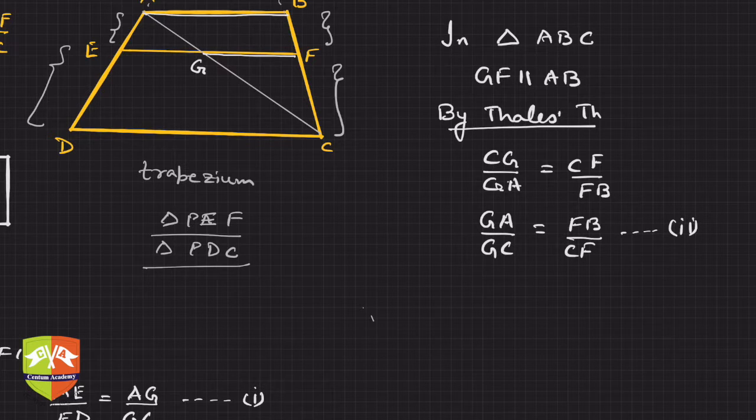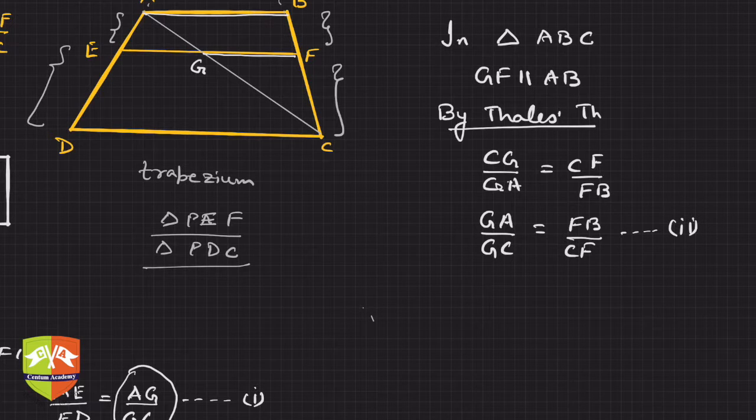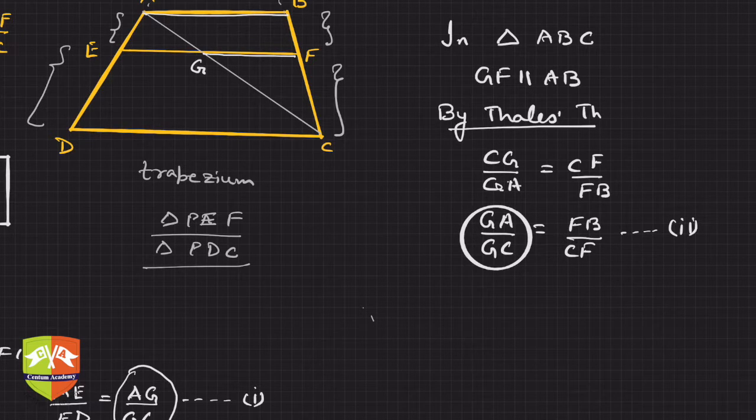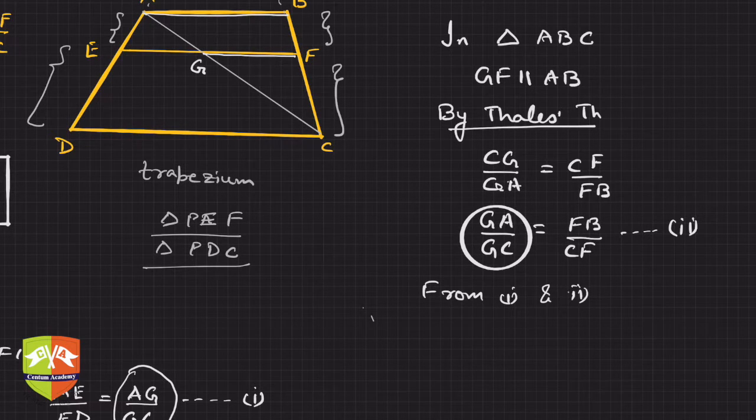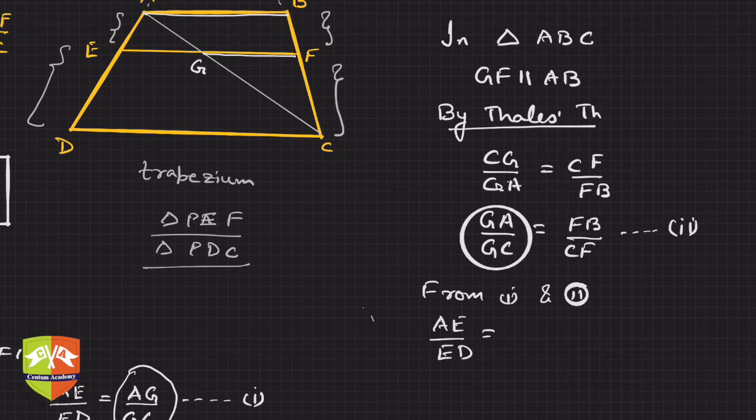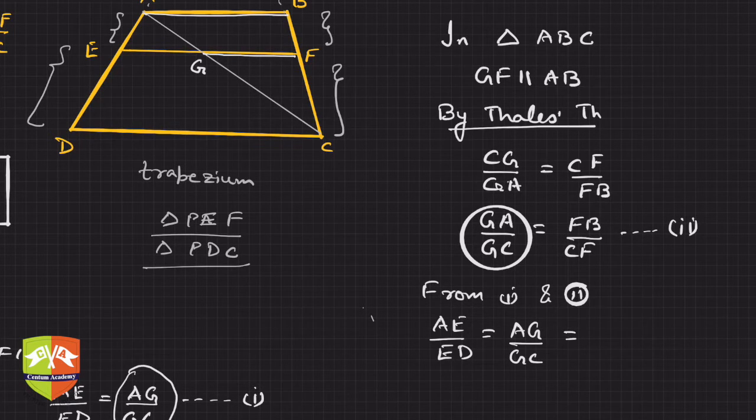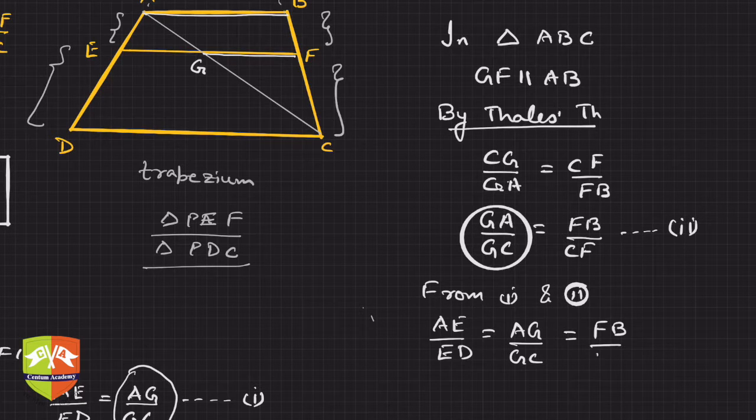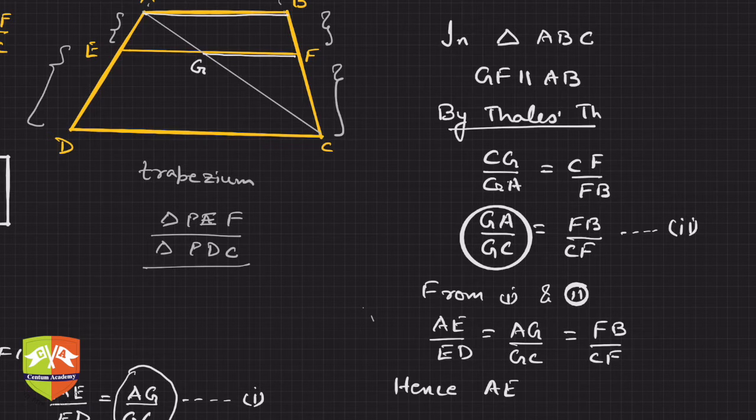So from one and two, if you see here also on the right-hand side it is AG and GC, AG by GC. Here also it is AG by GC. So hence from one and two you can say AE by ED is equal to AG by GC, which is equal to FB by CF.